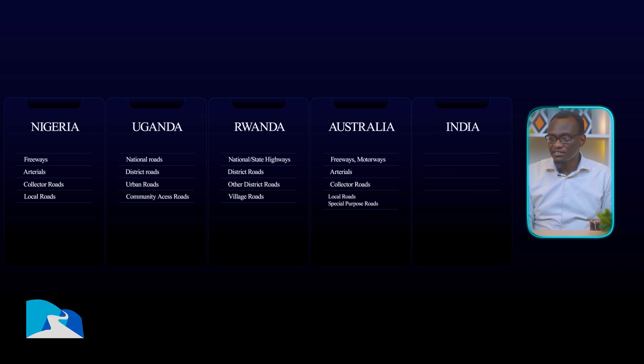There is that road that goes through different states or different districts — normally called an interstate, a freeway, or a highway depending on the country. The second level is arterial roads: Uganda calls them trunk roads, Rwanda and Kenya call them district roads, Nigeria and Australia call them arterials. India had national trunk roads, country roads, and special roads with different classes.